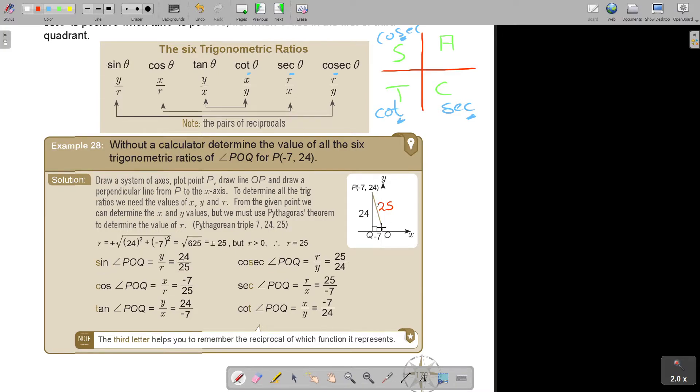And I fill it in. And now I just play around. It's always good to start with sin. What is sin? This is my angle, opposite over hypotenuse. Do you see the third letter? Cosec P. Just swap it around. 25 over 24. Cos, adjacent over hypotenuse. And then what will sec P? Swap it around. And tan, opposite over adjacent. So, cot is adjacent over opposite. The third letter helps you to remember reciprocal of which the function it represents. As I showed you earlier. That's an easy way to remember.